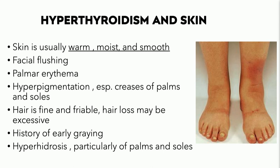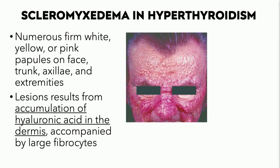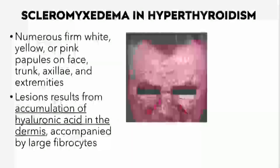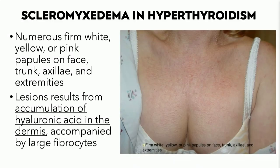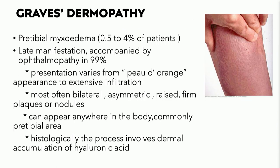Systemic findings in hyperthyroidism include high pulse rates and tachycardia, sometimes requiring cardiology referral. Scleromyxedema is an important dermatologic manifestation, with numerous firm white to whitish-yellow or pink papules on the face, trunk, and extremities due to hyaluronic acid accumulation — similar to what we see in pretibial myxedema. Graves dermopathy, or pretibial myxedema, occurs in roughly 0.5–4% of Graves disease patients, is often a late manifestation, and is associated with ophthalmopathy nearly 100% of the time, with a peau d'orange appearance from dermal hyaluronic acid deposition.